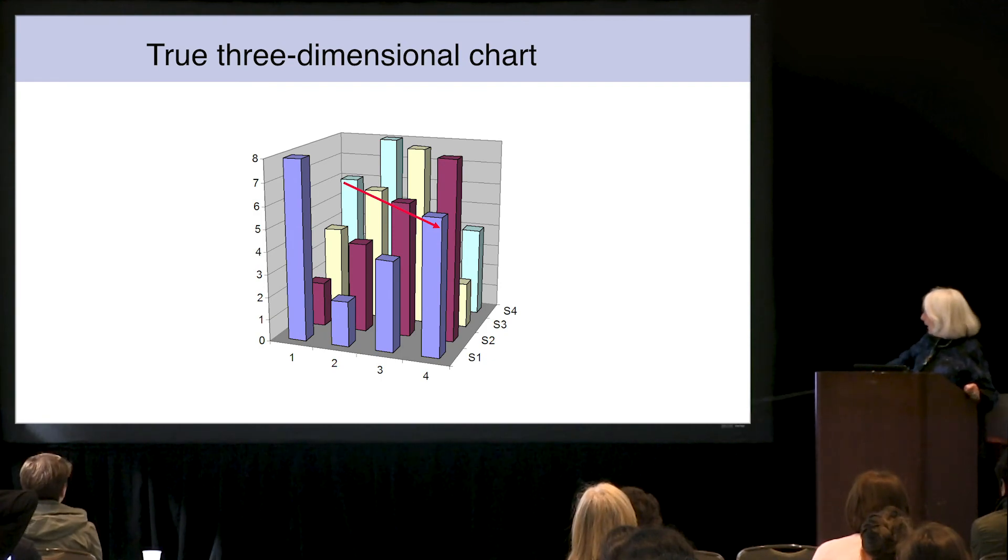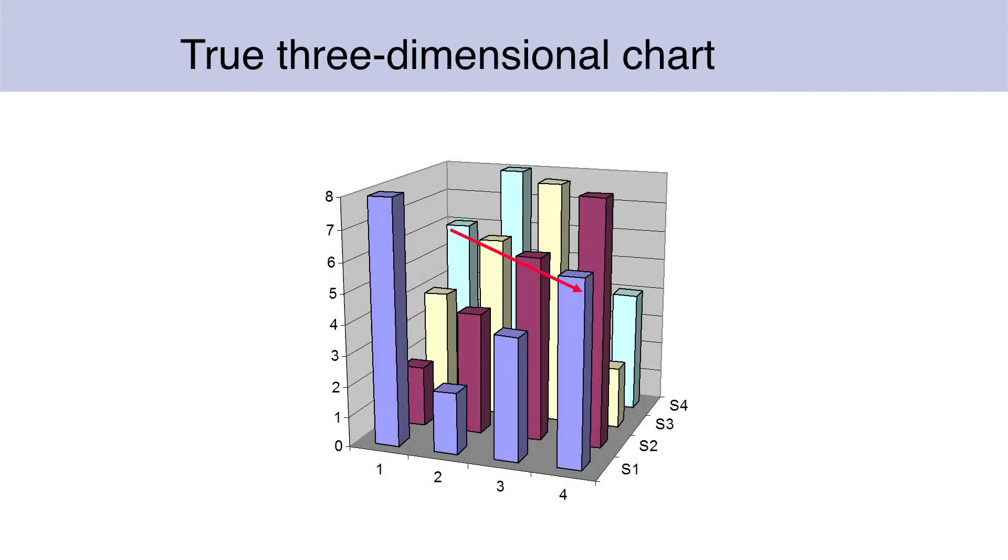And if we look at three, you don't see the two because it's behind the tall ones. So even if you really have three dimensions, these 3D bar charts are confusing.